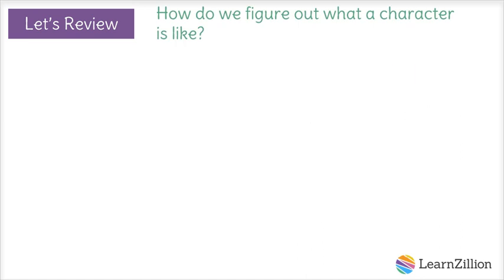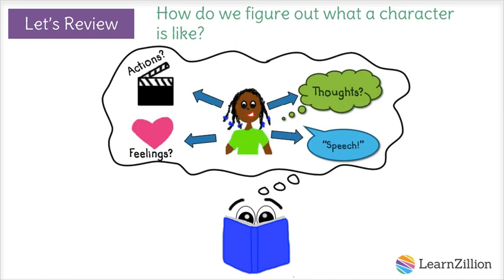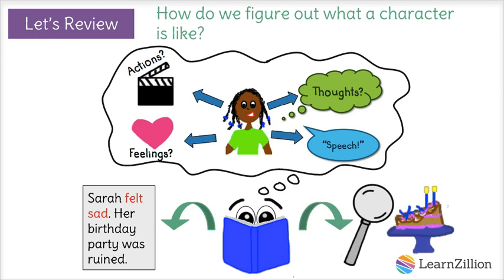So, how do we figure out what a character is like? Good readers figure out what a character is like by paying attention to that character's actions, feelings, thoughts, and speech. Sometimes the author will tell us right there in the text how a character feels, but more often than not, we need to do a little bit of detective work to figure it out by looking for clues in the rest of what we know about the character.